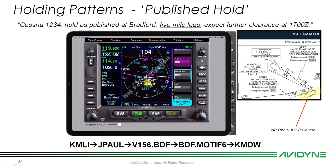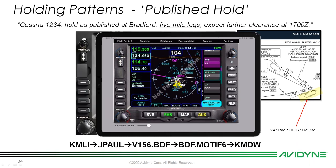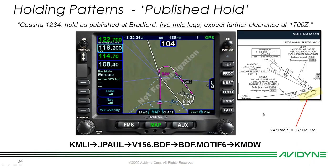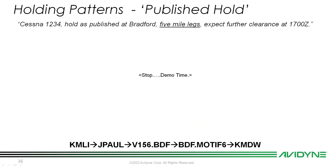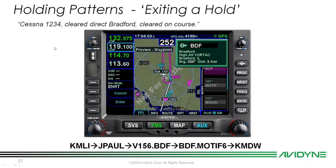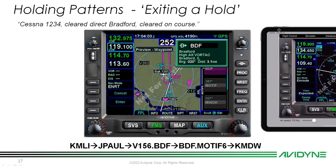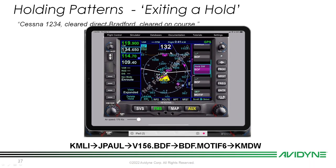That's what the published hold at Bradford looks like with five-mile legs. To exit, use the Exit Hold line select key just as before. The next down-path waypoint turns magenta once you cross the inbound radial.